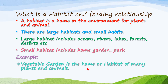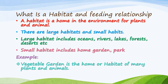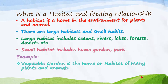Now I will give you an example of small habitats. A vegetable garden is a home, or a habitat, of many plants and animals. Some people have gardens and you must have seen insects or different types of bugs — dangerous insects that eat your plants. So that garden is their habitat.